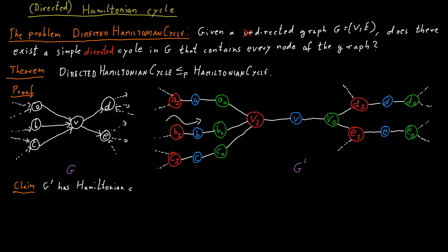And I claim that now this new undirected graph has a Hamiltonian cycle if and only if the original directed graph had a directed Hamiltonian cycle.